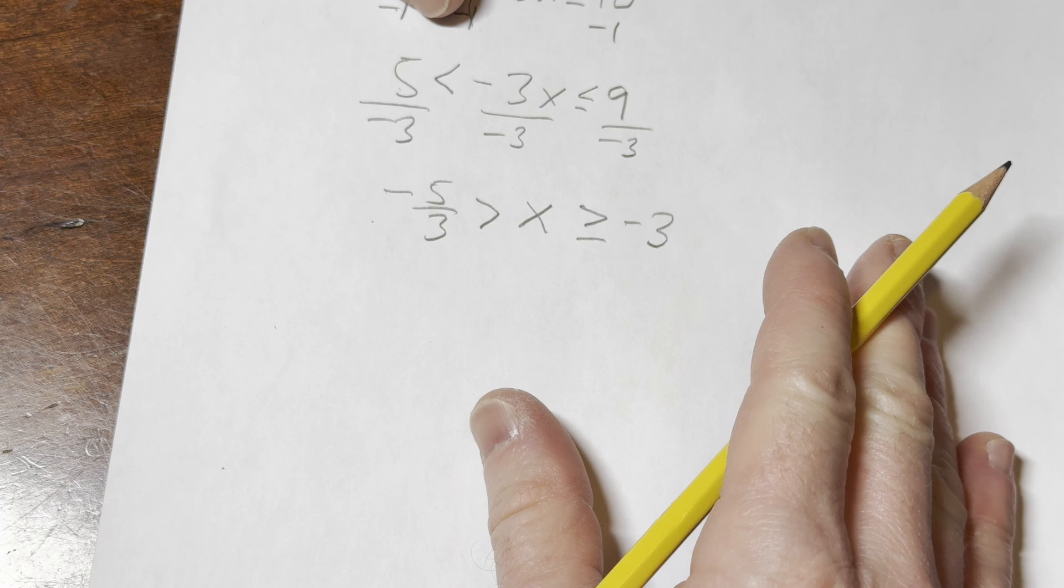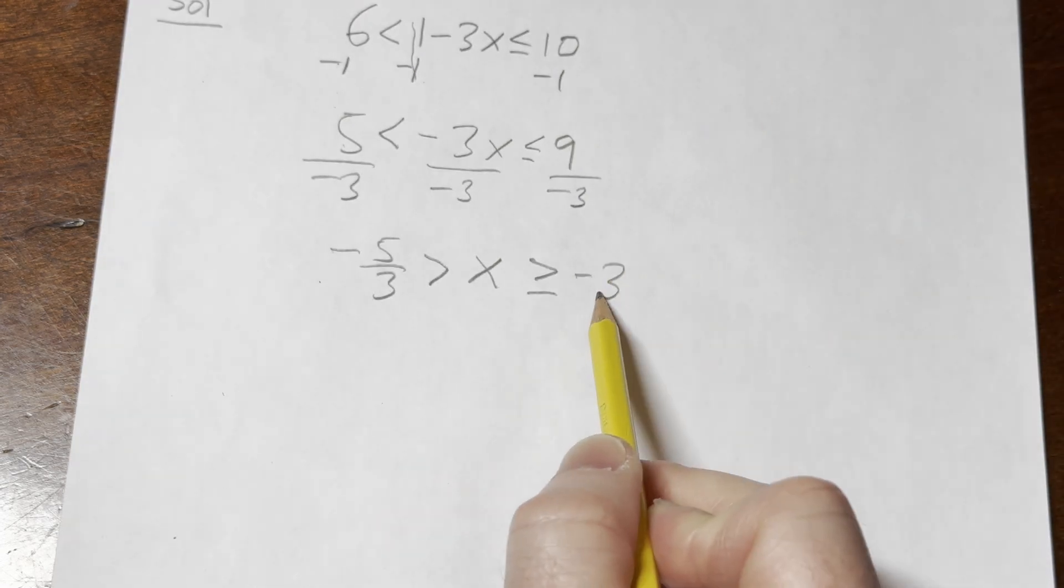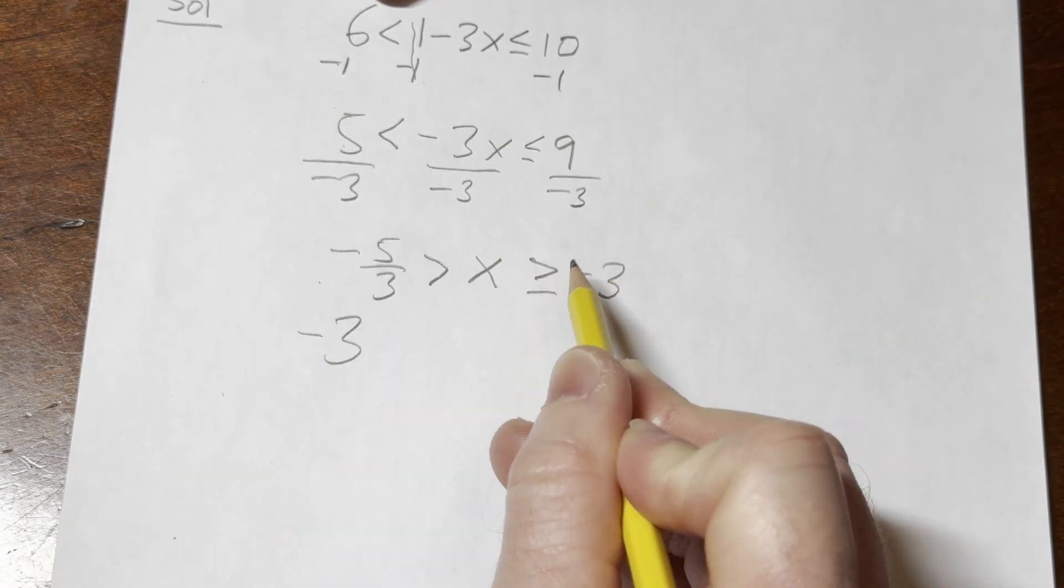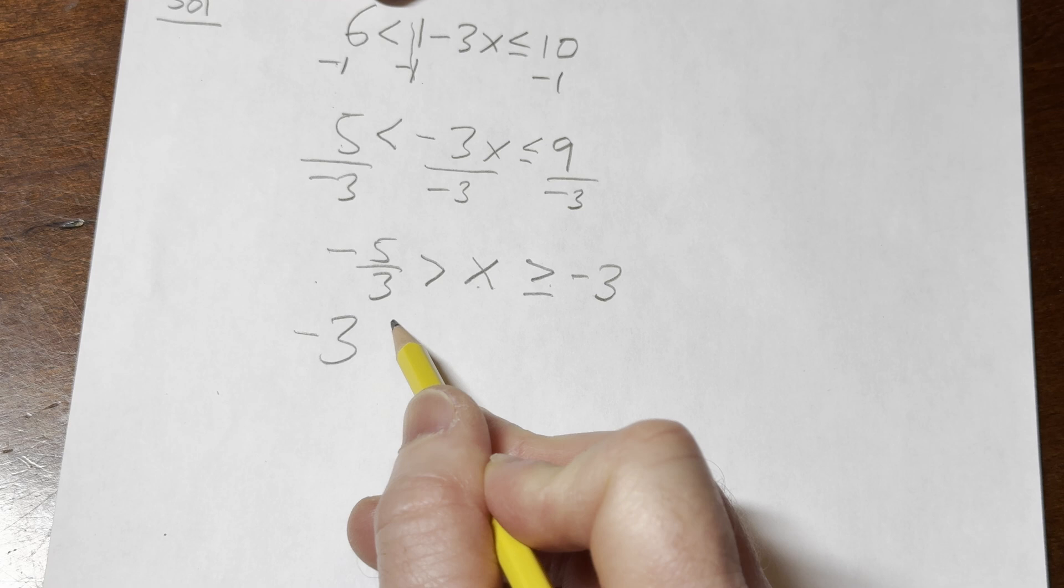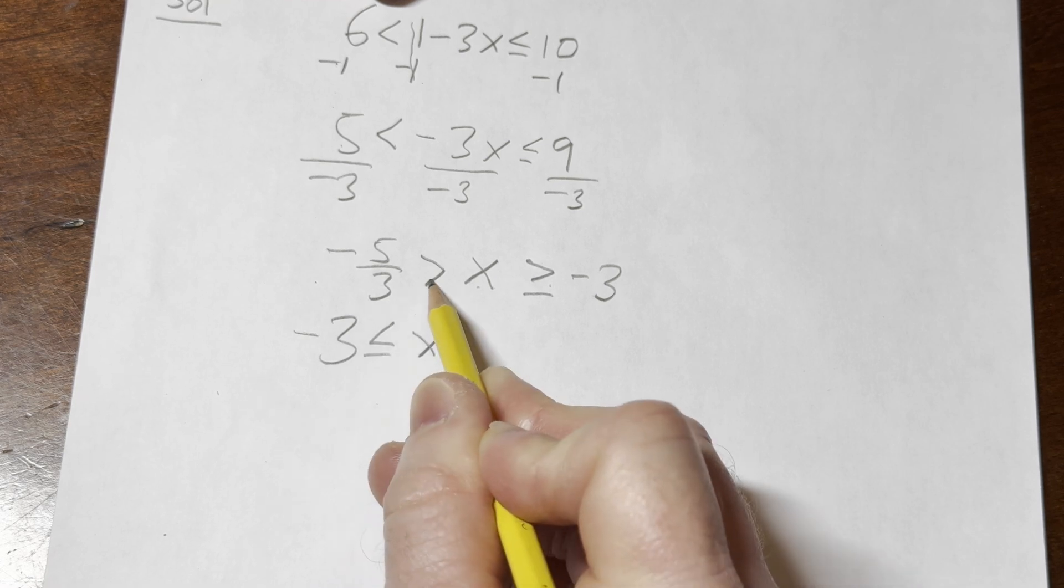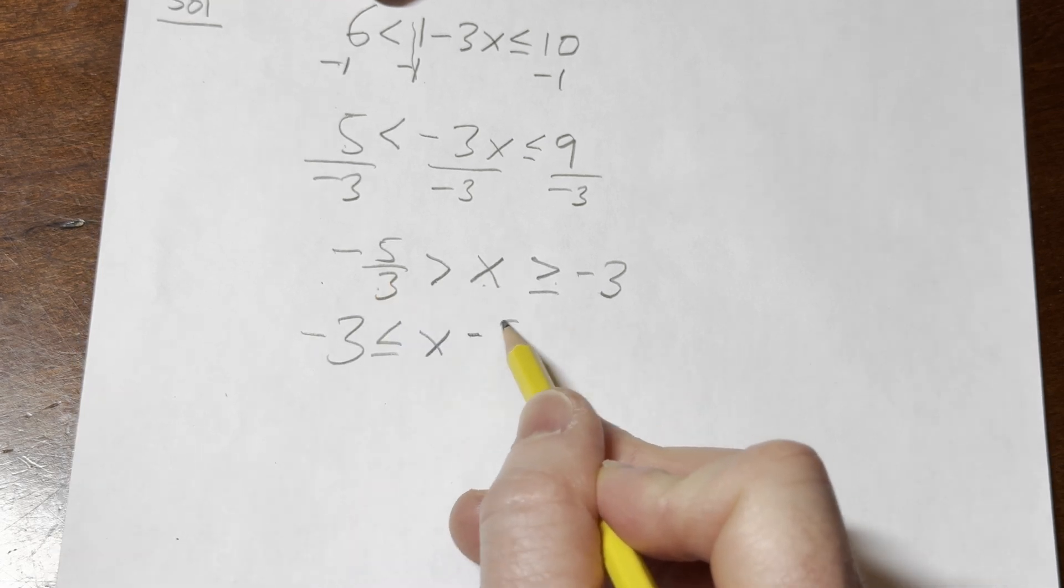So now you want to write it backwards. So it's negative 3 less than or equal to x, less than negative 5 thirds, reading it backwards.